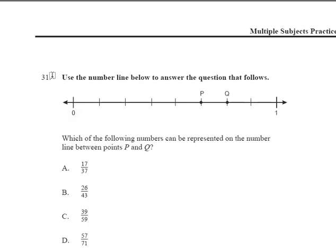Okay, now we are on question number 31 and we're asked to use a number line. It says which of the following numbers can be represented on the number line between points P and Q. So pay attention to what they're asking you to do.